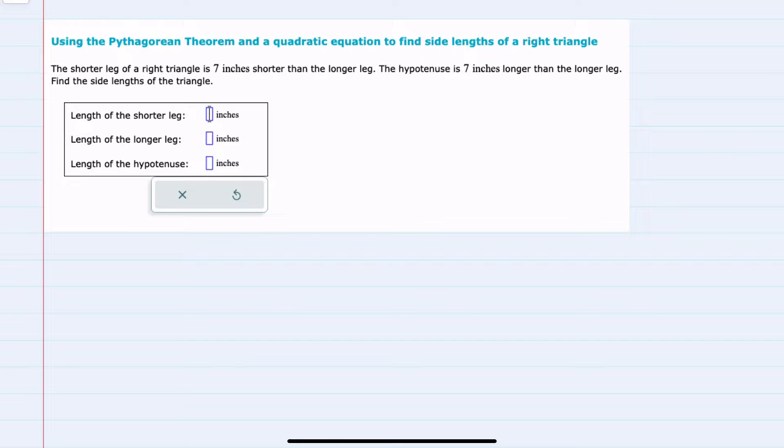We're told here that the shorter leg of a right triangle is seven inches shorter than the longer leg and the hypotenuse is seven inches longer than the longer leg. And then we're asked to find the lengths of both legs and the hypotenuse.